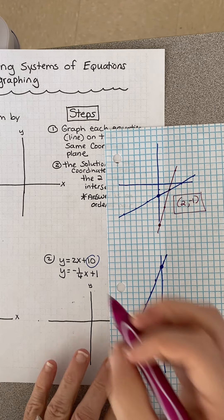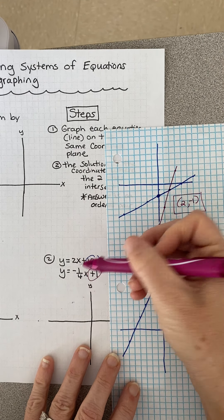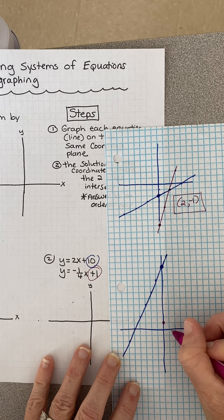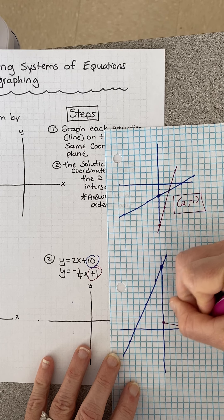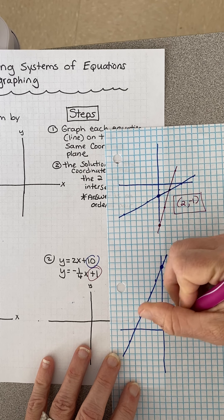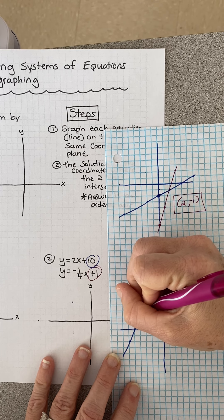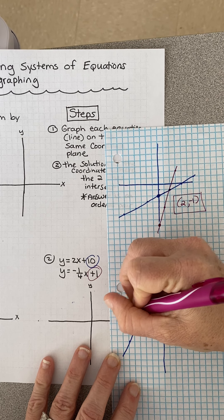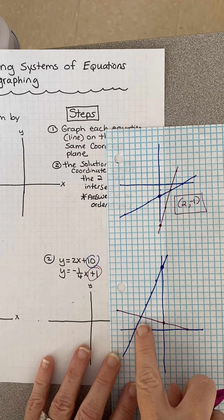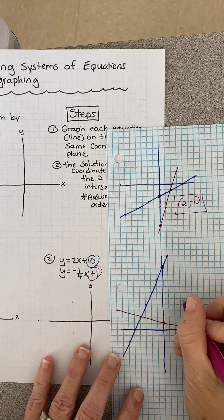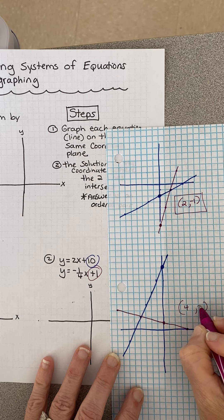For the second line, my y-intercept is 1 and my slope is negative 1/4 - down 1 over 4. I don't need to keep going down here because they're not going to intersect that way - this is the direction I need to go. My solution is the point at which they intersect: 4, 2.